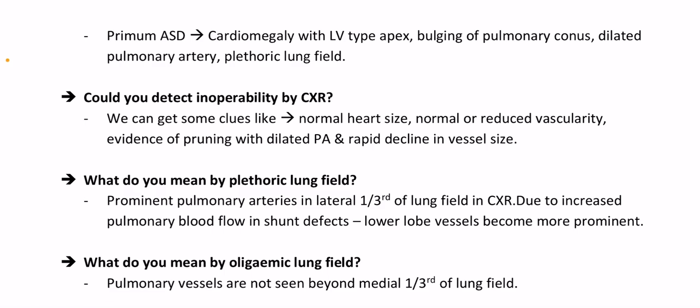Can you detect inoperability by chest X-ray? We can get some clues: normal heart size, normal or reduced vascularity, evidence of pruning with dilated pulmonary artery, and rapid decline in vessel size. What is meant by plethoric lung fields? Prominent pulmonary arteries visible beyond the outer one-third of the lung field on chest X-ray, due to increased pulmonary blood flow in shunt defects; lower lobe vessels become more prominent. What is oligaemic lung field? Pulmonary vessels not seen beyond the medial one-third of the lung field.